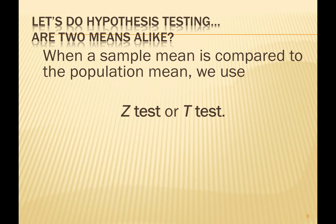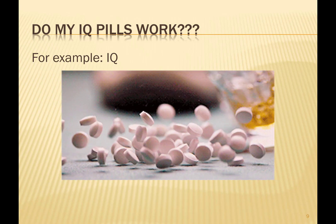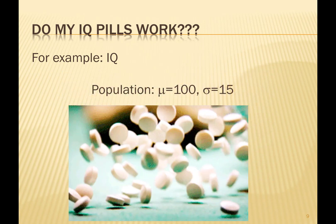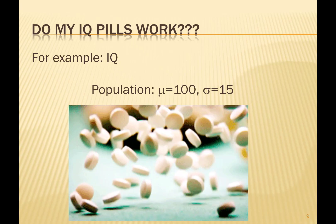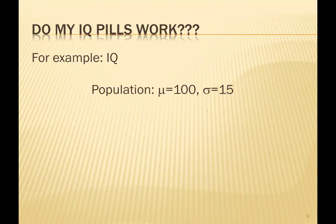Let's do hypothesis testing. The key question here is: are two means alike? We're comparing a sample mean and a population mean, and we choose to do either a Z-test or a T-test to compare these two means. Here's the question: do my pills work? IQ pills. Let's assume I've put some chemicals together to enhance or increase one's IQ level. We know that in the population, the mean is 100 with a standard deviation of 15 — known information from many IQ tests that have been done.